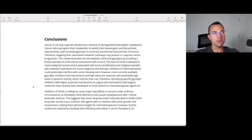Inhibitors of LDHA expression could potentially interfere with cancer development. However, most currently available glycolytic inhibitors have low potency and high doses are required with the potential high levels of systemic toxicity, which restricts their use. Therefore, identifying specific glycolytic inhibitors with higher potencies has become an urgent task and several small organic molecules have been recently developed as novel antitumor chemotherapeutic agents. Inhibition of LDHA is unlikely to cause major side effects in humans under ordinary circumstances as hereditary LDHA deficiency only causes myoglobinuria after intense anaerobic exercise. This suggests that novel drug-like small molecules able to inhibit LDHA enzymatic activity may constitute safe agents able to interfere with tumor growth and invasiveness, making them attractive targets for chemotherapeutics. However, further studies are required to elucidate their efficacy and safety in cancer therapies.